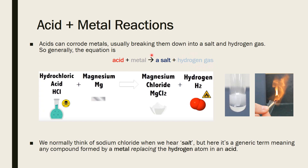This salt isn't your normal table salt — it isn't necessarily sodium chloride. When we refer to a salt in these types of reactions, it's a substance produced by the metal replacing the hydrogen atom in the acid. More importantly, we also get this hydrogen being produced, which is highly flammable.